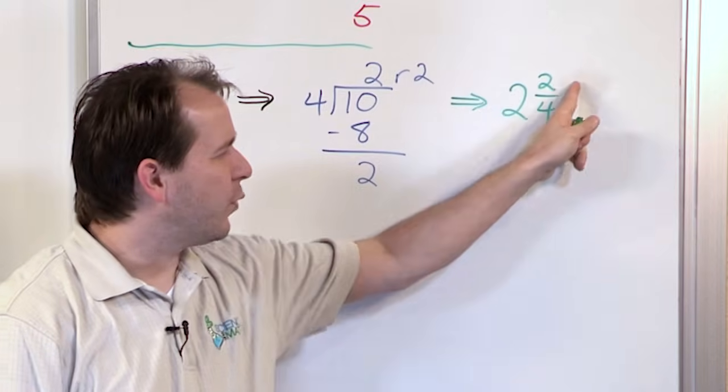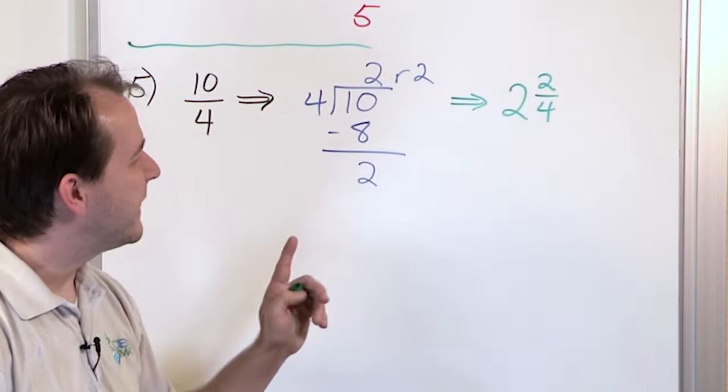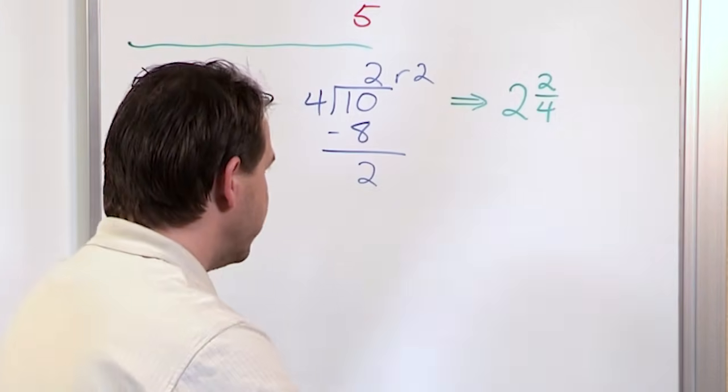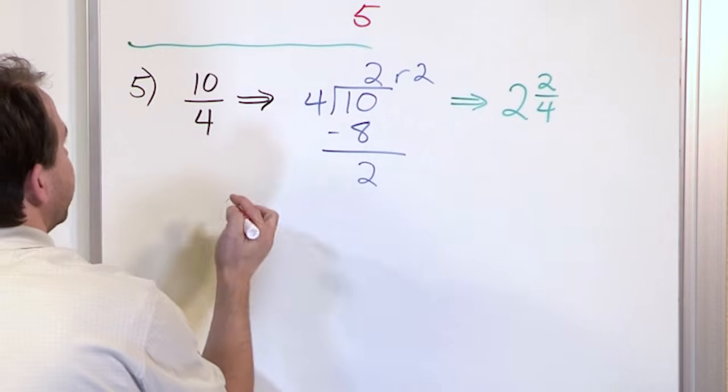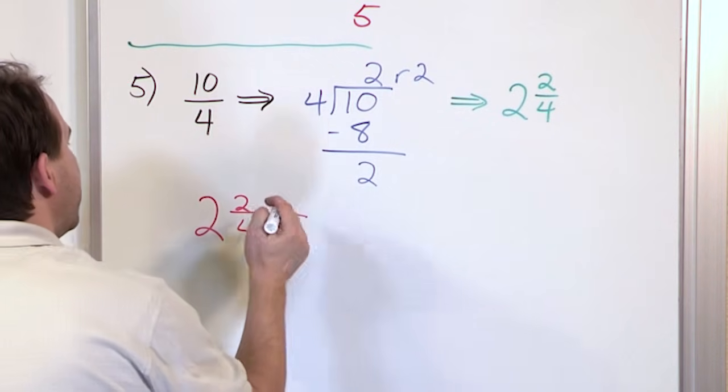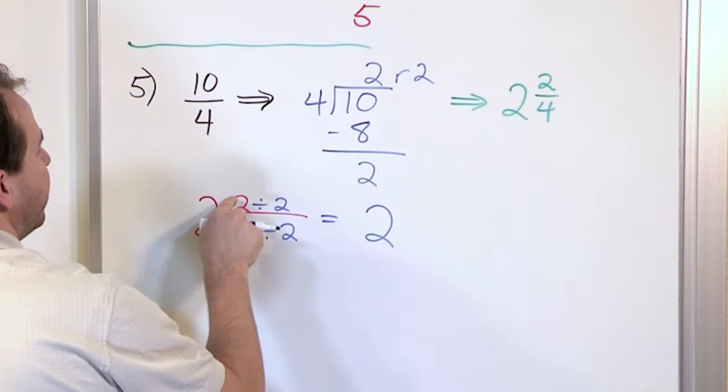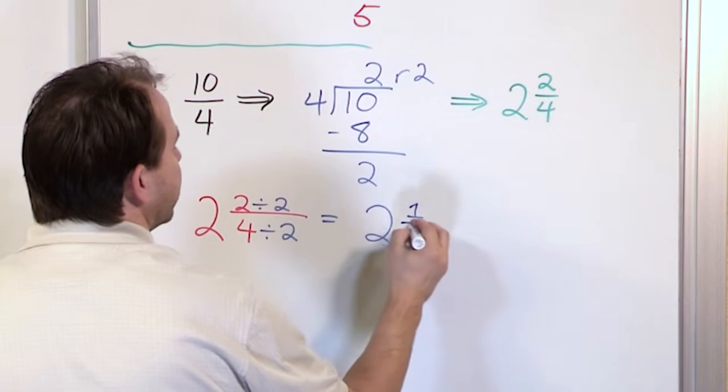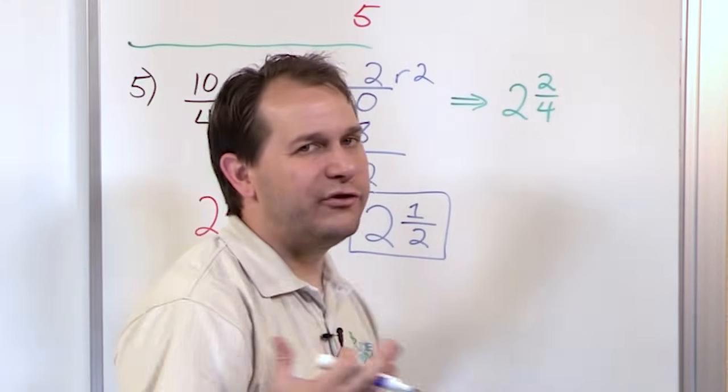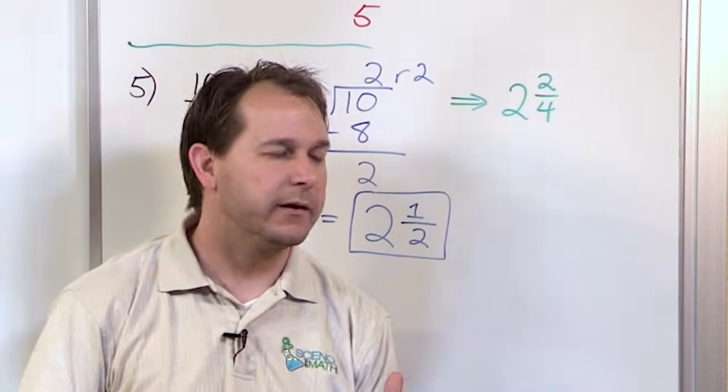But look at it carefully. 2 fourths, that fraction can be simplified further because I can actually divide the top and the bottom by some number that can make it simpler, some number other than 1. 2 and 2 fourths—what can I divide by? I can divide the top by 2 and the bottom by 2. So what I have is big 2 from here. 2 divided by 2 is 1, 4 divided by 2 is 2.